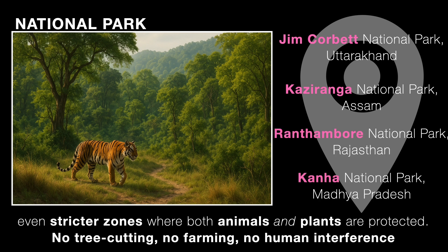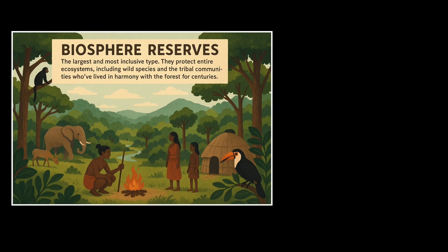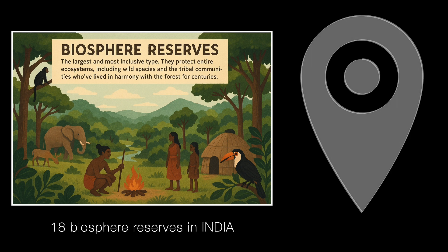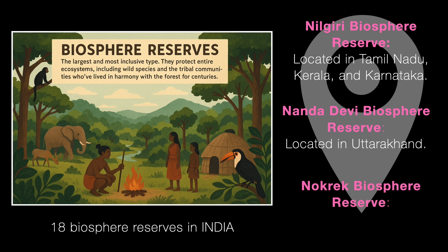And finally, we have the big one — biosphere reserves. These are the largest and most inclusive of all. They protect the whole ecosystem: animals, plants, rivers, and even the tribal communities who have been living in harmony with the forest for generations. India has about 18 biosphere reserves, including the Nilgiri Biosphere Reserve spread across Tamil Nadu, Kerala, and Karnataka; Nanda Devi Biosphere Reserve in Uttarakhand; and Nokrek Biosphere Reserve in Meghalaya.